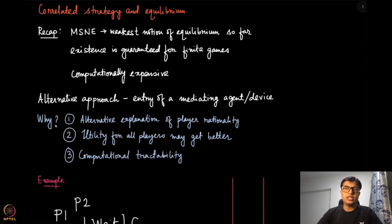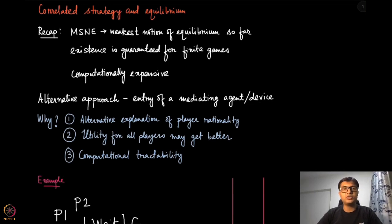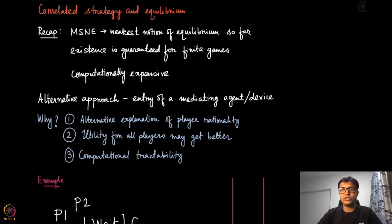Let us remember one of our examples — the cricket or football game happening between two friends. In our discussion so far we have assumed that those decisions were made independently, and therefore we can find pure strategy Nash equilibrium and mixed strategy Nash equilibrium in those kinds of games.